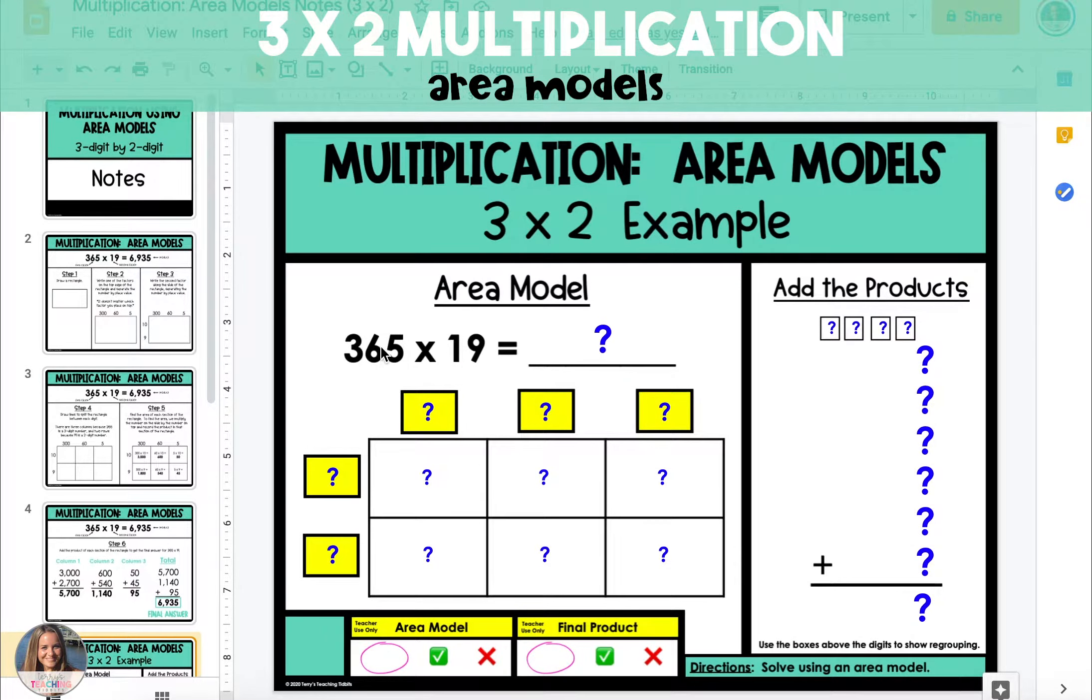In this example we're going to multiply a three-digit number by a two-digit number. We begin by creating a rectangle and putting our first factor on the top edge of the rectangle, separating the number by place value.